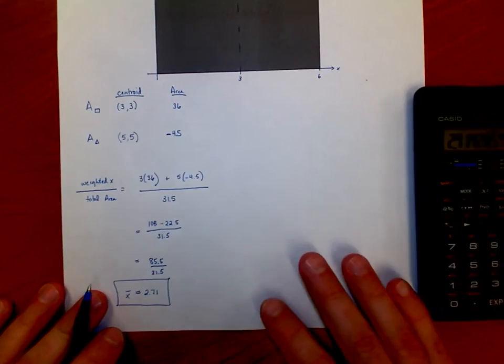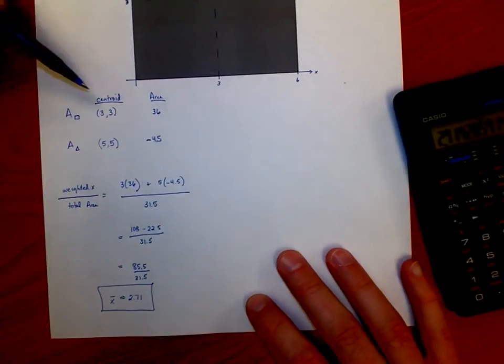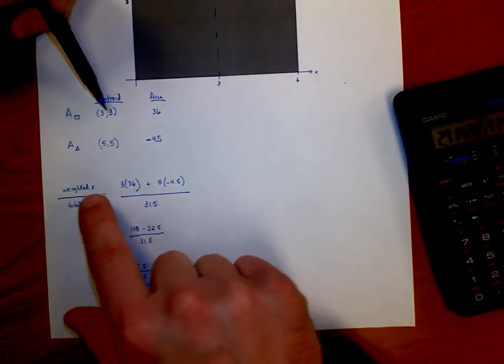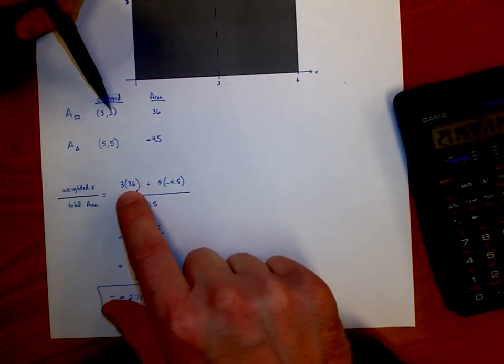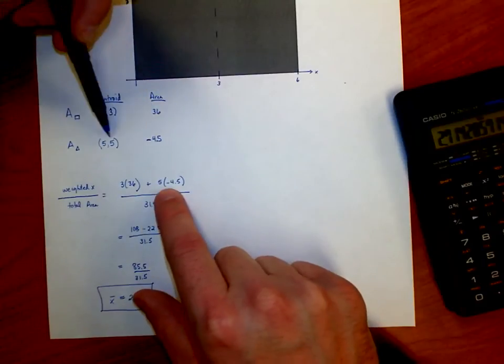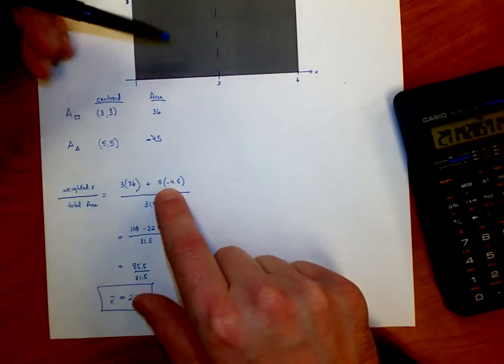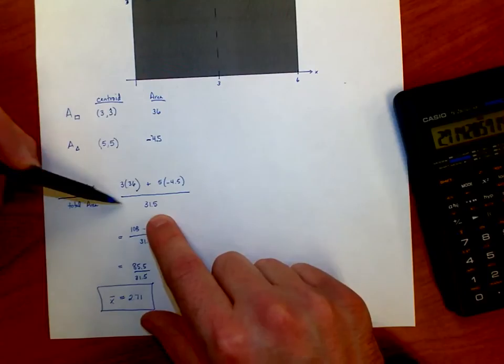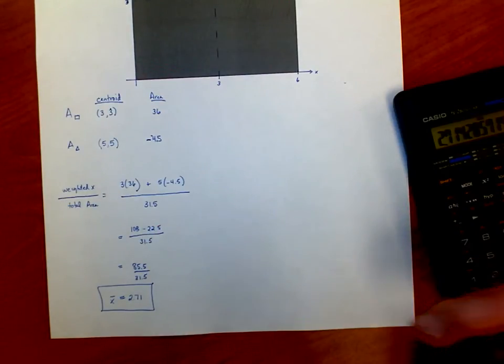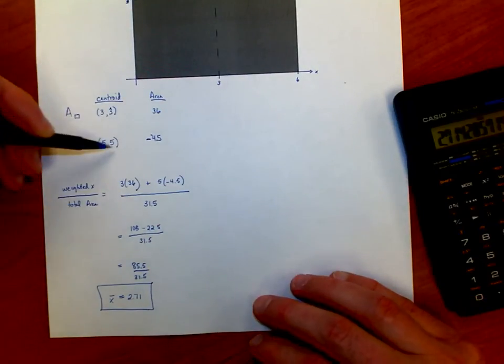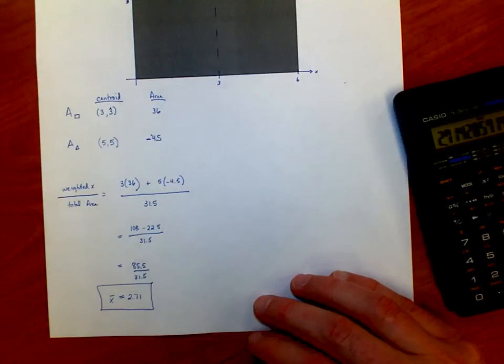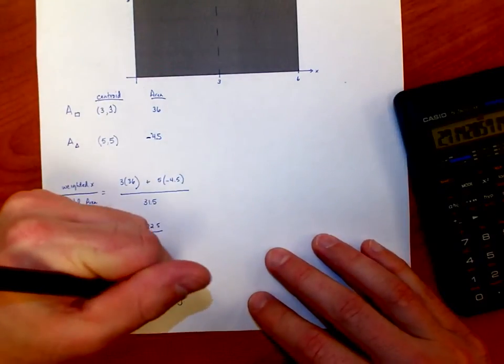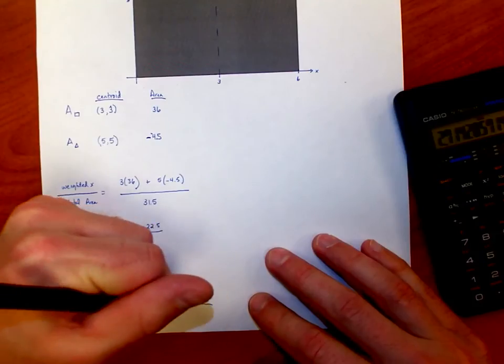Now, as far as the y's go, I repeat the same process, but I'm going to point out something to you. I'm going to end up with the y's going 3 times 36 and 5 times the negative 4.5. I'm going to divide it by 36 minus 4.5. You're going to get the exact same number, because you have the same x coordinates as y, same x as y, and the same areas. So that means that your y is going to be 2.71 as well.